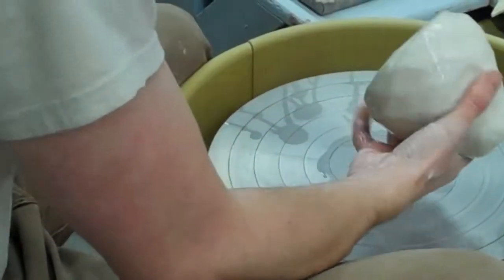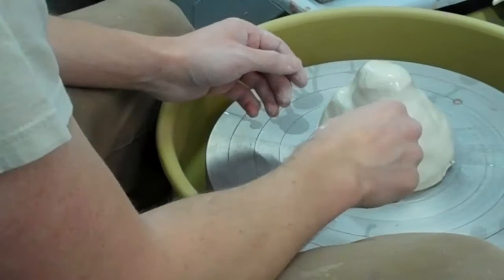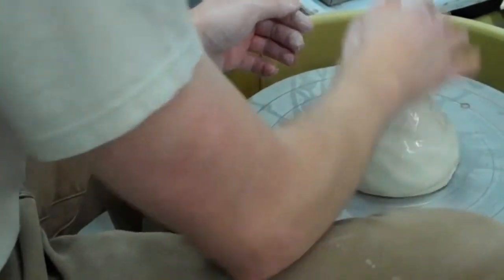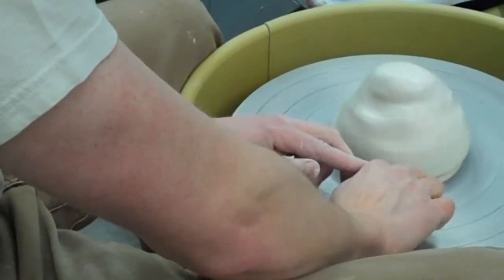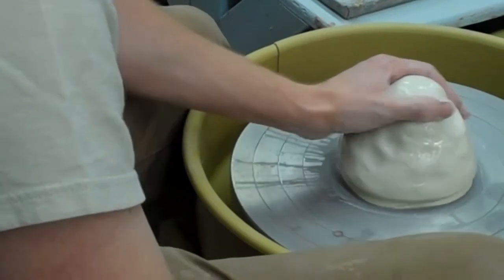First thing you do, get your ball of clay, smack it down on there. Try to get it stuck. If it's not stuck by throwing it down, you can wet your finger and run it across the bottom like that. It seals it to the wheel head so it's not going to move around.